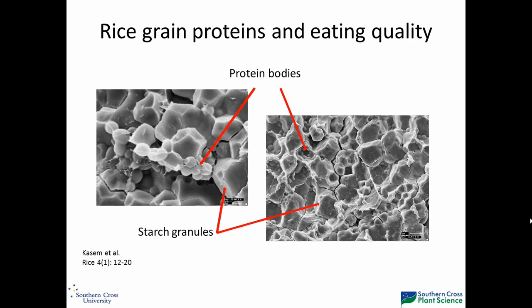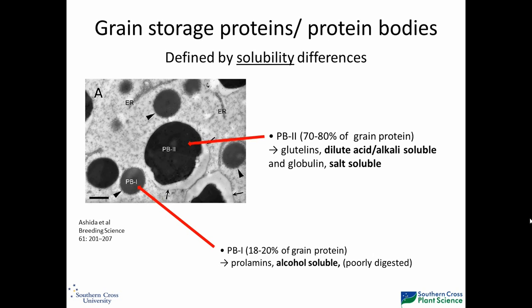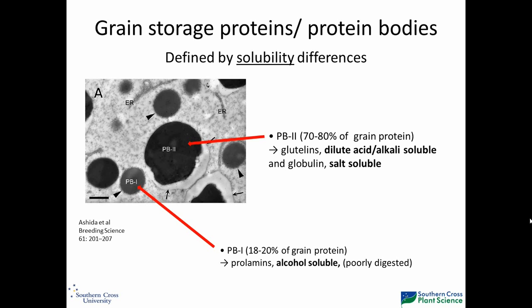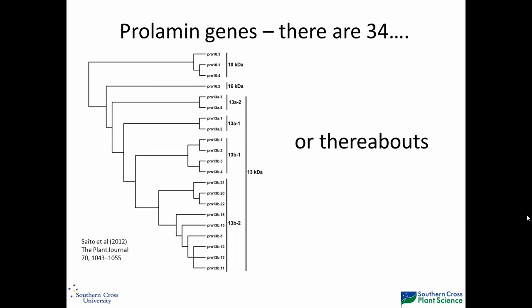If you look at a rice grain and break it apart, you can see protein bodies — these little round things — and the starch granule. There are two different types when stained: protein body two (the glutelins) and protein body one. They're defined by their solubility differences, which is important because widely differing solubility means a reasonable possibility they'll have an impact on rice eating quality. The glutelins are soluble in dilute acid and alkali, globulins are salt soluble, and prolamins — around 20% of the total — are alcohol soluble.